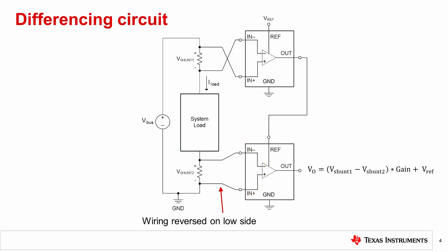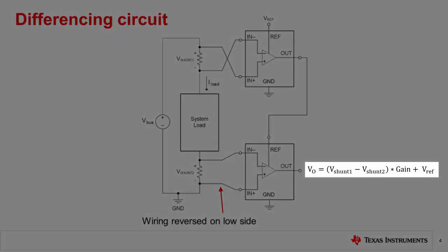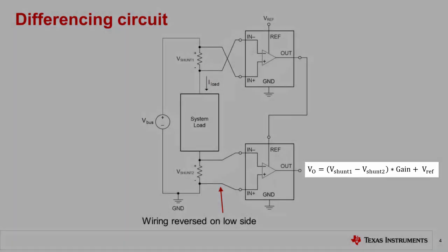Therefore, in this example, if the current into and out of the load is equal, then the output is equal to V ref. If the currents are different, then the difference in current is amplified by the device gain and added to V ref.